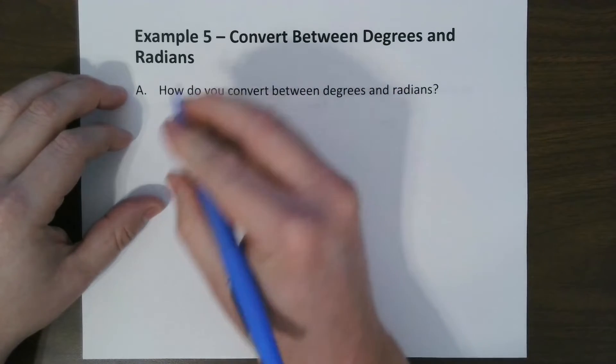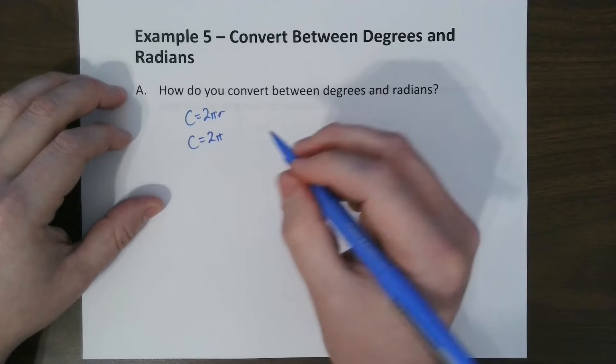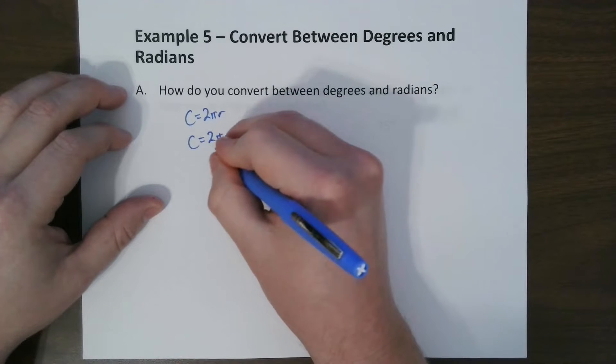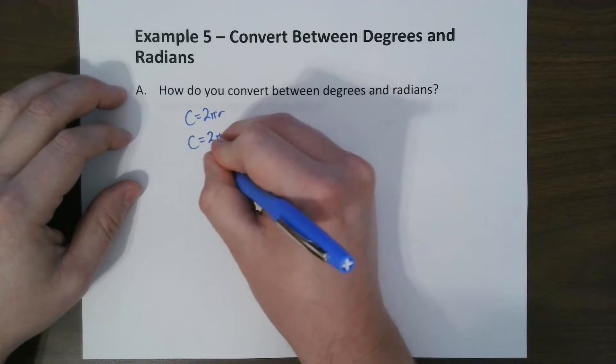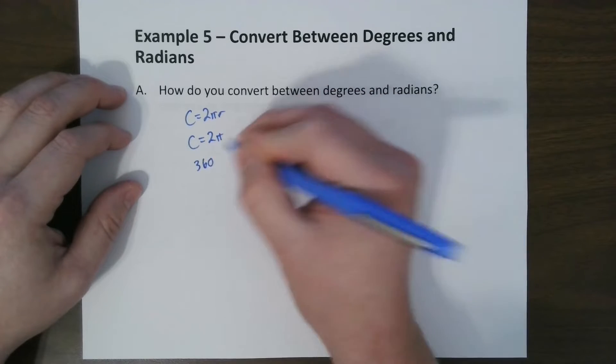We know that that's the radius, the radian measure. But that goes with 360. We know it's 360 degrees for 1 full rotation.